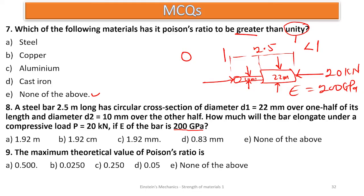Number nine: the maximum theoretical value of Poisson's ratio — remember it lies between 0 and 1, and theoretically the maximum we can have is 0.5, so 0.5 is the maximum. Number ten: the highest value of stress for which Hooke's law is applicable for a given material — for Hooke's law (stress equals E times strain) to be applicable, the material is supposed to be within the proportional limit.